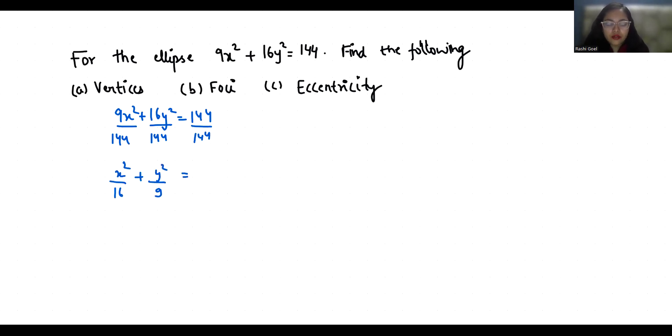Now we know that the denominator of x² is greater—that is, 16 is greater than 9—that means the ellipse follows the standard form x²/b² + y²/a² = 1.